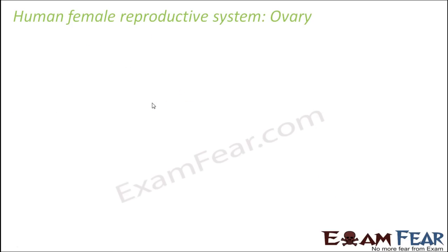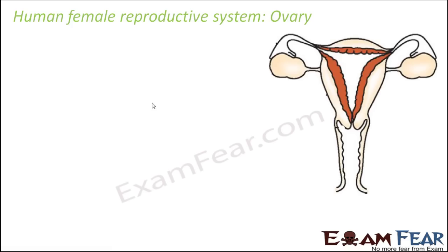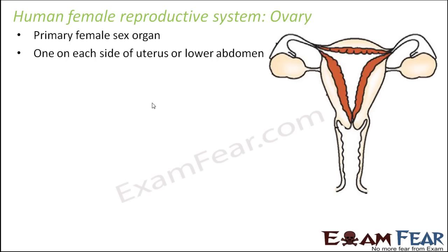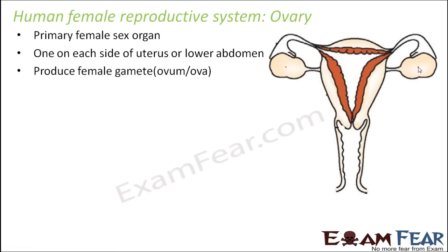Let us look at the primary organ first, that is the ovary. It is the primary female sex organ, with one on each side of the uterus or lower abdomen. This is one ovary on one side and another ovary on the other side, often referred to as right ovary and left ovary. They produce the female gamete, which is the ovum or egg cell.